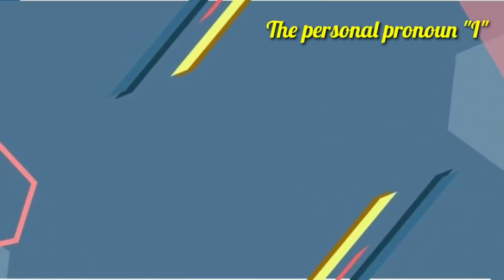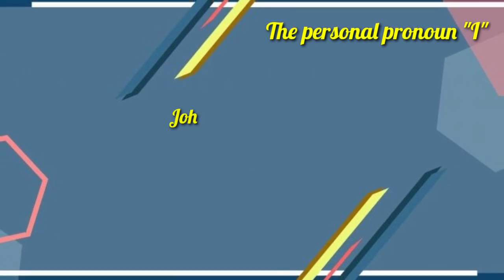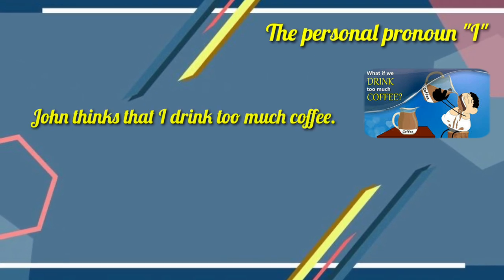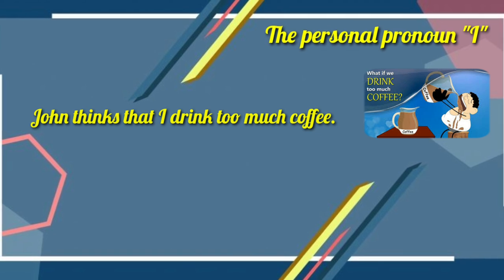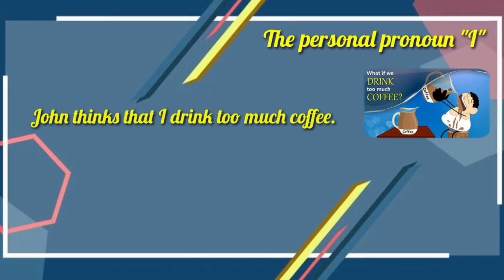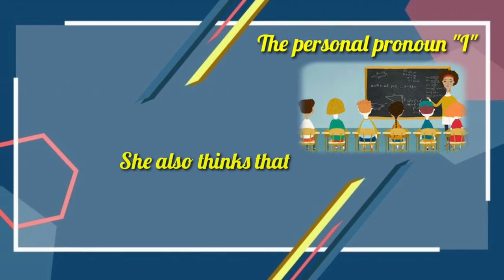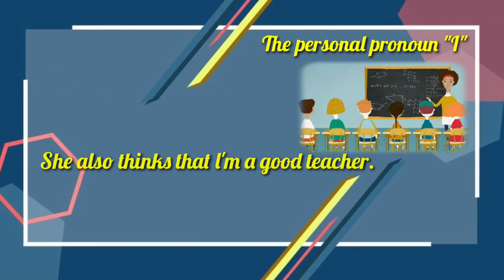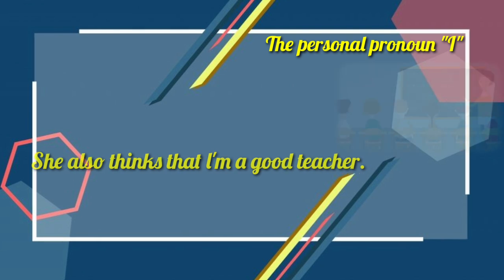Rule two: the personal pronoun 'I'. We always write I as a capital letter. Example: 'John thinks that I drink too much coffee.' Here, I is a single letter word. Even if it is in the middle of a sentence, I is always a capital letter. Example: 'She also thinks that I am a good teacher.'